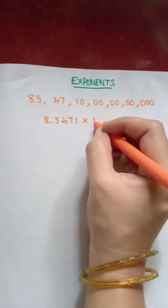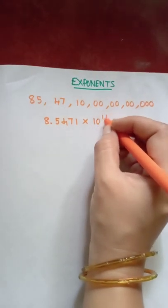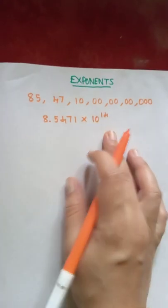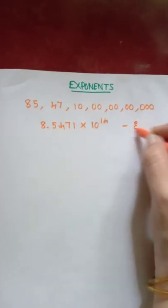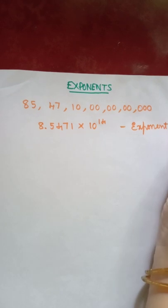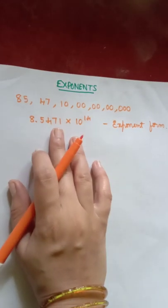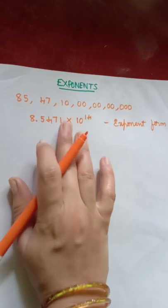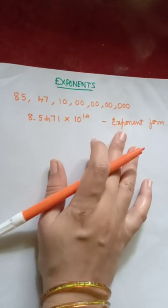So it will be 8.5471 into 10 raised to 14. Now this is the exponent form of this number. To make expression of the larger numbers easier, you need exponents.